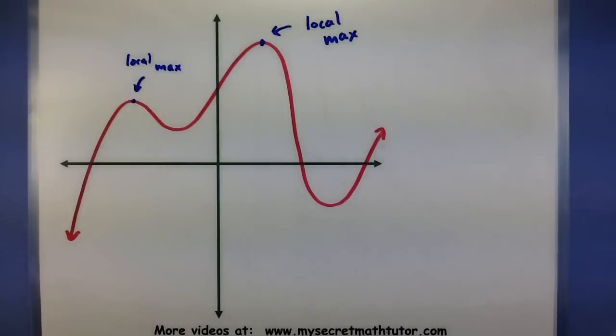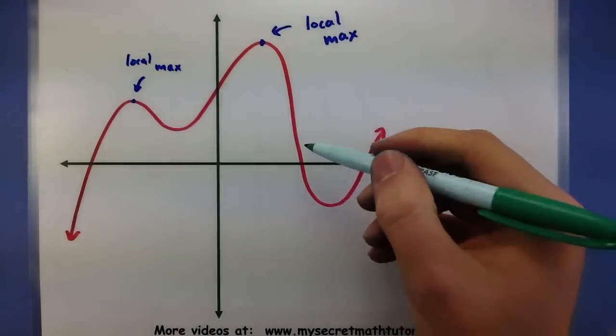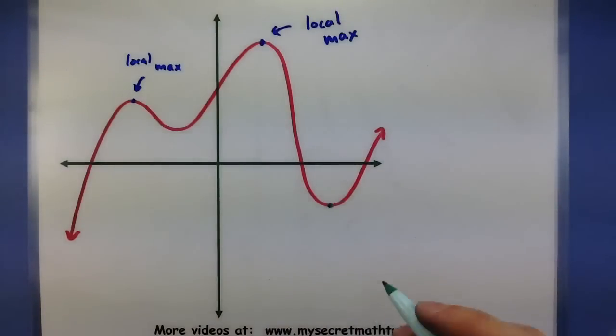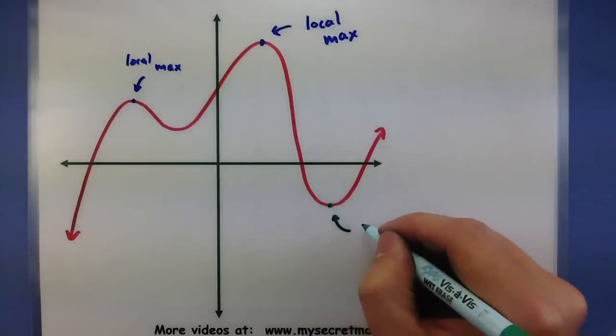Now with that idea in mind, you can also look at low points in the graph. And again, think about some small interval, and if you have some point that is the smallest of that interval, then you have your local minimum.